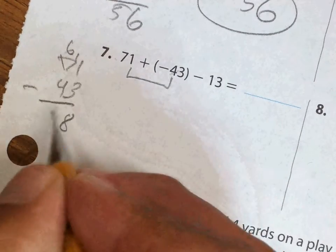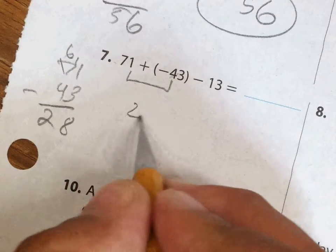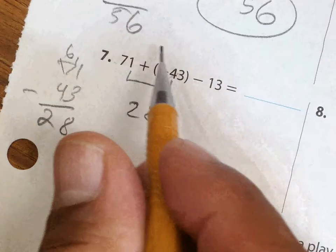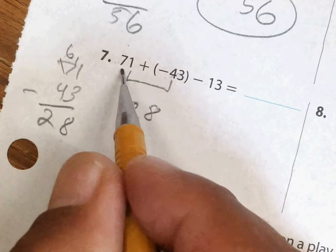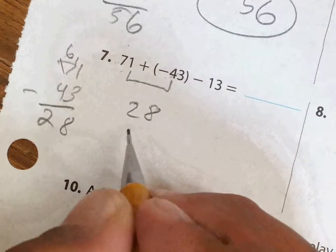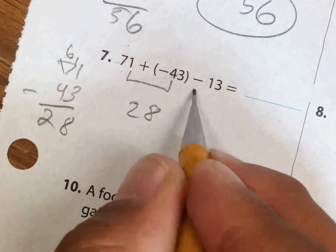This becomes 8, it's 28. Now is this 28 positive or negative? Who is further away from 0, 71 or the negative 43? I can tell everybody that 71 is further away, so that means that my answer is positive here. Now I bring this down, minus 13.